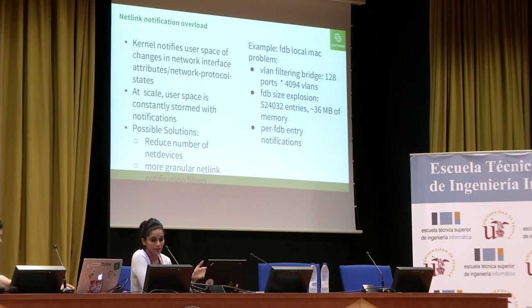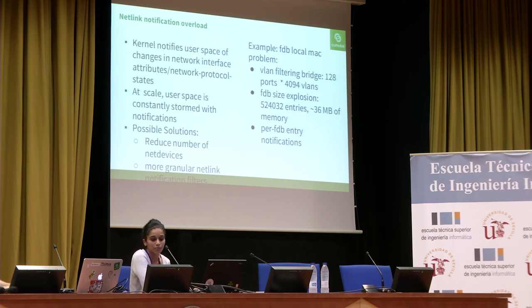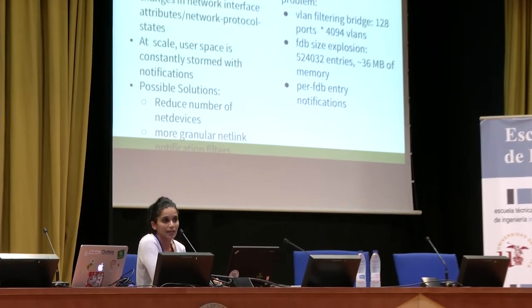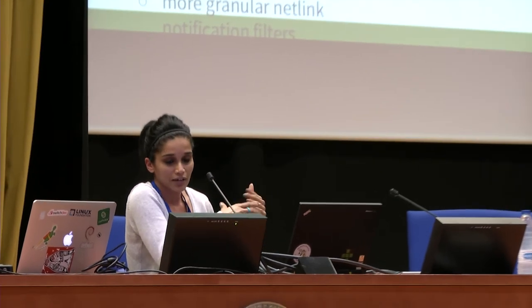With 10 or 20 network daemons on a box, you can easily see how all of them get busy at once processing the same information. Another example: creating a VLAN-filtering bridge with 4,094 VLANs — the bridge driver adds a local FDB MAC for every port. With 10 bridge ports this isn't a problem, but at 4,000 bridge ports you will see an explosion of notifications for every local FDB entry that is added.